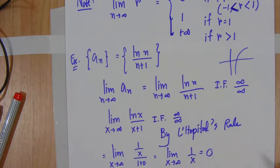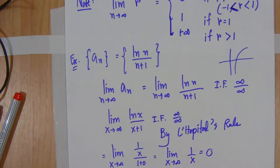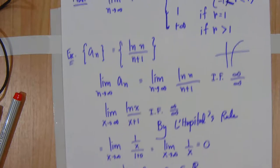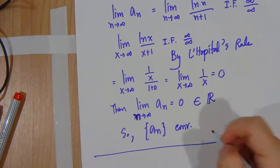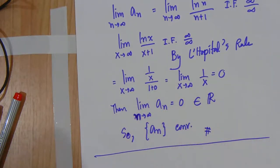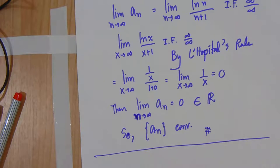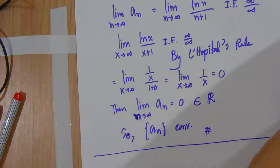So the limit of the term a_n when we apply the rule is also 0, which is a real number. We can conclude that our sequence is convergent.